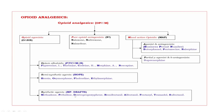Next, synthetic agents. The drugs are MPDRAFTs. M — methadone. P — pethidine. D — dextropropoxyphene. R — remifentanil. A — alfentanil. F — fentanyl. T — tramadol. S — sufentanil.